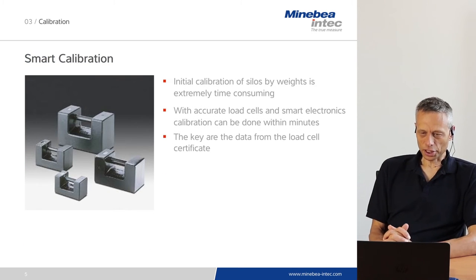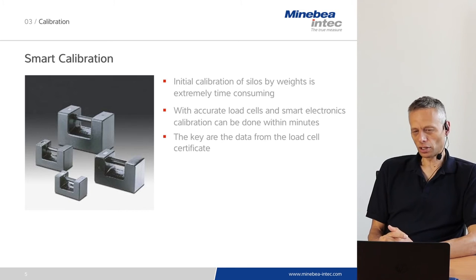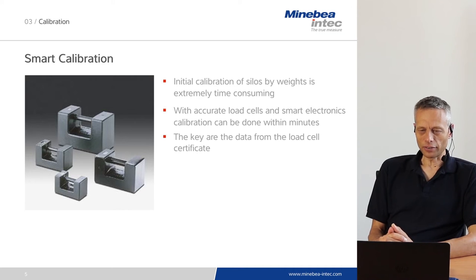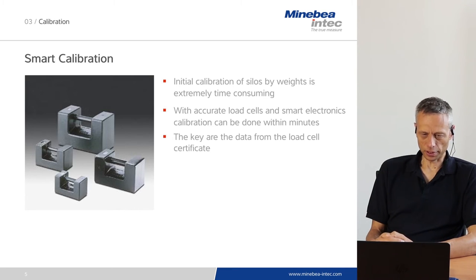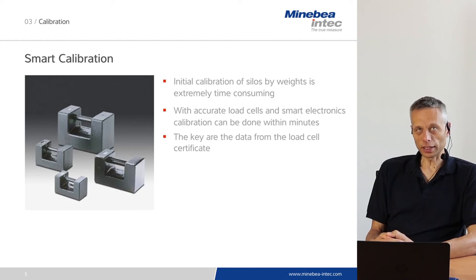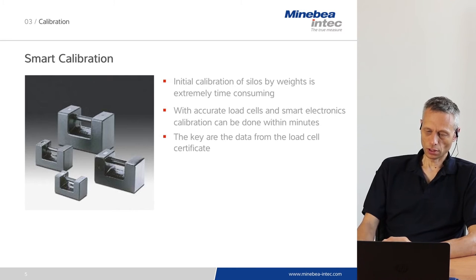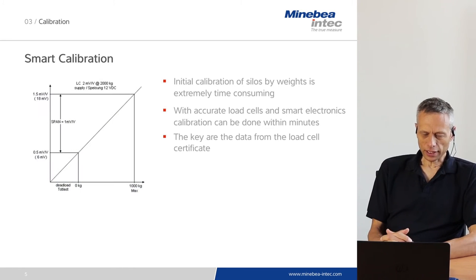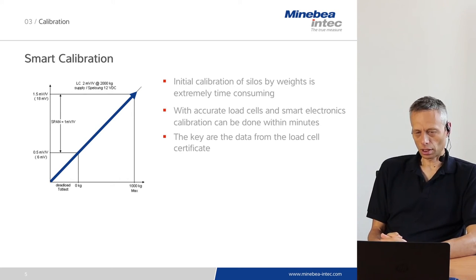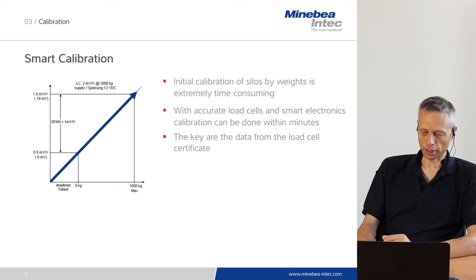Since initial calibration of silos by weight is extremely time consuming, there is a need for an alternative method. We assume that the load cells which are installed are very accurate and that the mechanical installation of the whole silo has been done properly. Given these conditions, we can perform a smart calibration which is based on software and the calibration data of the load cells. Smart calibration means calculating an expected full scale deflection value based on load cell data found on the certificates.